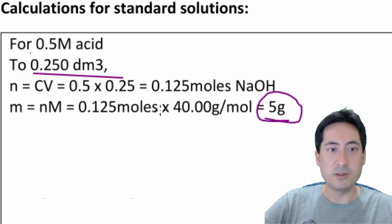So if I want a 0.5 molar, then number of moles is concentration times volume, so I'm going to need 0.125 moles. And then if I'm going to do that, I need to work out the mass. So the mass of 0.125 moles is 40 grams per mole for sodium hydroxide. So I need about 5 grams.